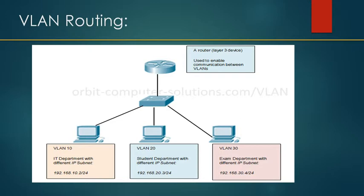Each VLAN has a different IP subnet, and there is a one-to-one correspondence between VLAN and IP subnet boundaries. If a host is in a given IP subnet, it is also in a given VLAN, and vice versa. For example, if host A needs to communicate with host D, it first sends an ARP frame with host D's destination IP address and a broadcast MAC address. The switch then forwards this broadcast to all other ports in VLAN 10, including the one attached to the router.